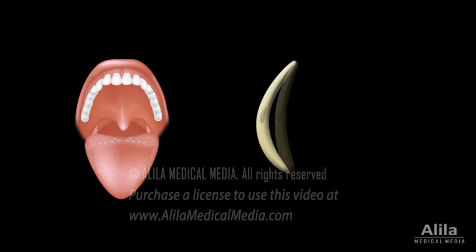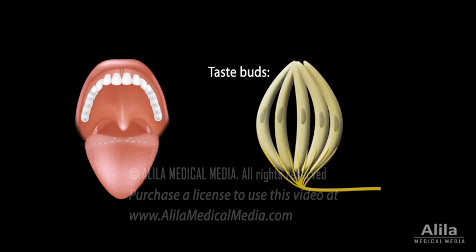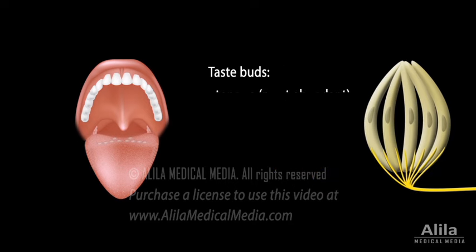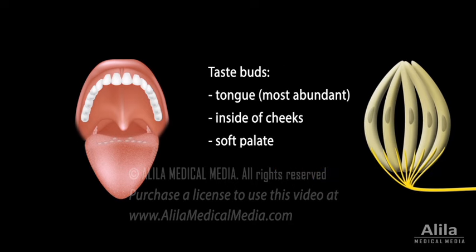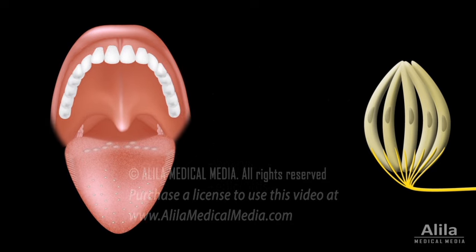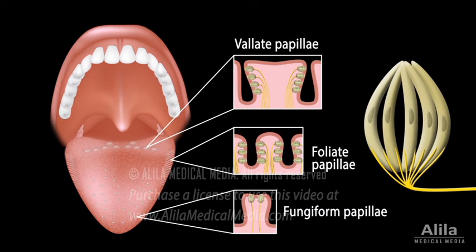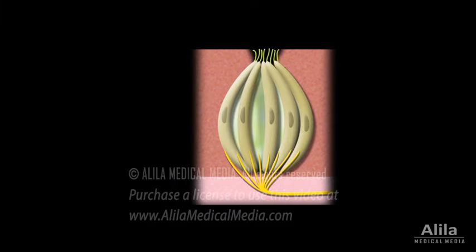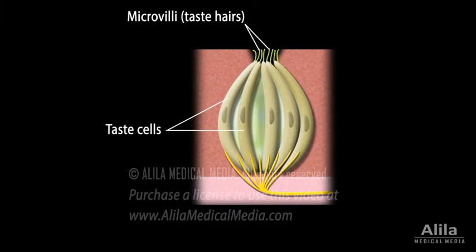Taste receptor cells are organized in groups called taste buds, which are present most abundantly on the tongue but also on other parts of the mouth. On the tongue, taste buds are located on small visible bumps called papillae. There are different types of papillae on different parts of the tongue, but the taste buds that they contain are all similar in structure. Each taste bud is composed of about 50 taste cells with microvilli at the top projecting into a pit called the taste pore.